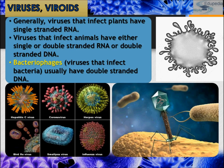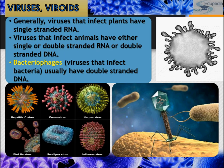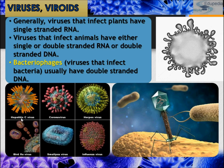Generally, viruses that infect plants have single-stranded RNA. Viruses that infect animals have either single- or double-stranded RNA or double-stranded DNA. Bacteriophages — viruses that infect bacteria — usually have double-stranded DNA. Examples of viruses include Hepatitis C virus, Coronavirus, Herpes virus, Influenza virus, Smallpox virus, and Bird flu virus.